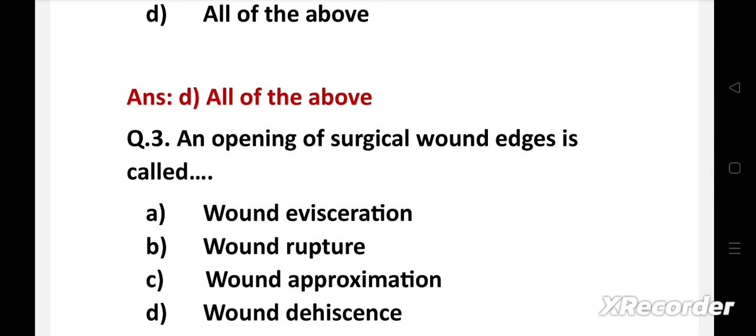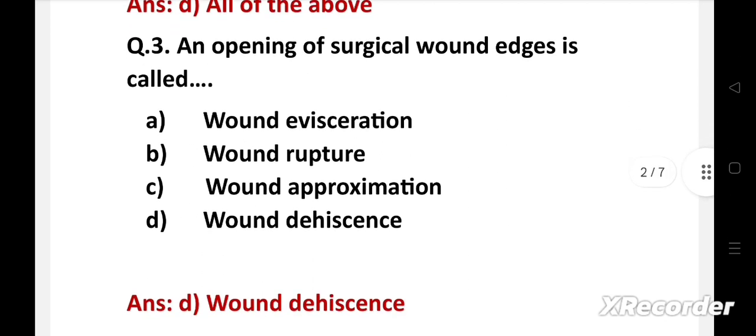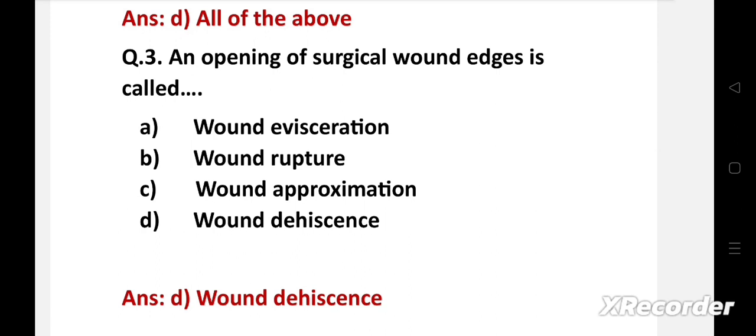Question number three: An opening of surgical wounds is called — option A: wound evisceration, B: wound rupture, C: wound approximation, D: wound dehiscence. The right answer is option D: wound dehiscence. Wound dehiscence is a surgical complication in which a wound ruptures along a surgical incision. It may be due to too tight suturing, loose or improper suturing, sneezing, and coughing.